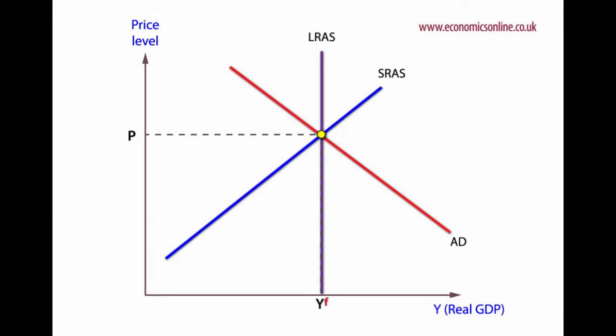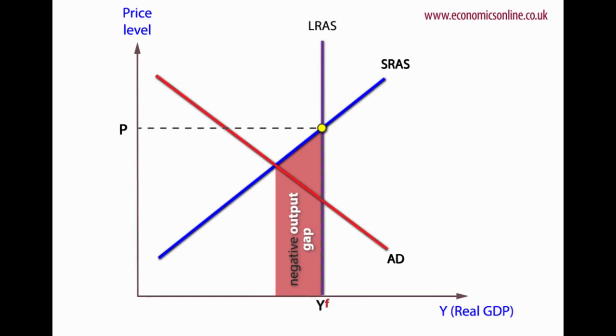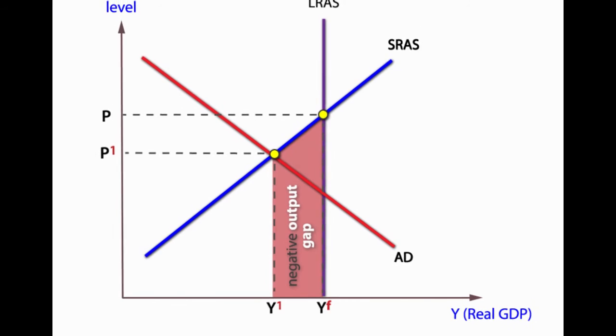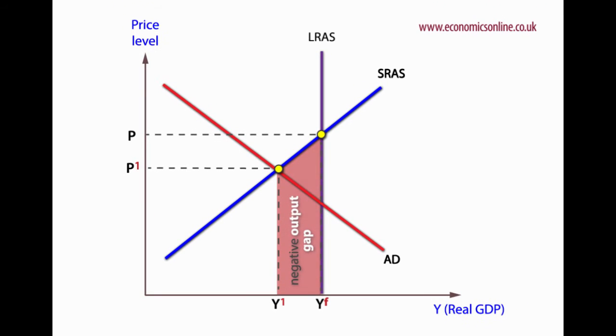A negative demand-side shock can reduce aggregate demand, causing a negative output gap. This could be the result of a fall in a component of aggregate demand or a fiscal or monetary shock. This is what happened to many global economies following the 2008 financial crash.